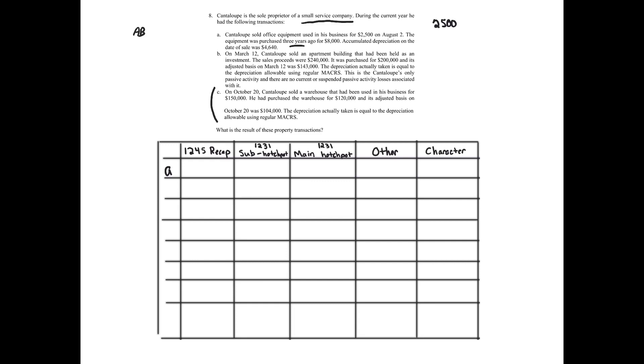So we need to calculate the adjusted basis first. So the adjusted basis is going to be the $8,000 purchase price minus the $4,640 depreciation. So what is that? $3,360. So the adjusted basis is $3,360. So in this transaction, we have an $860 loss.